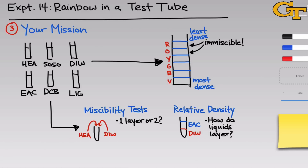Record detailed notes in your lab notebook as you perform the miscibility and relative density tests, because you'll put that information together to carefully construct the chemical rainbow. Once you have the results, you'll slowly pipette the liquids into a test tube to form the rainbow. Careful addition of each layer is key, because we do not want one of the upper layers to interpenetrate a lower layer with which it might be miscible.